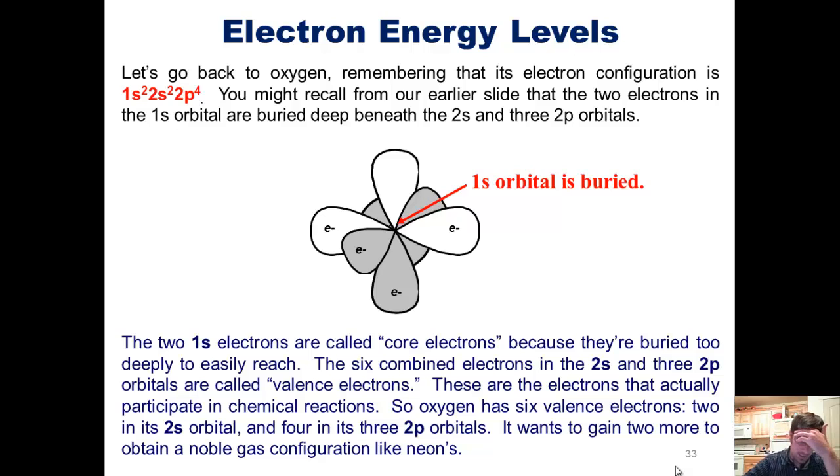The two 1s electrons are called core electrons because they're buried too deeply to easily reach. The six combined total electrons in the 2s and three 2p orbitals are called valence electrons. These are the electrons that actually participate in chemical reactions. So oxygen has six valence electrons, two in its 2s orbital, and four in its three 2p orbitals. It wants to gain two more to obtain a noble gas configuration like that of neon.